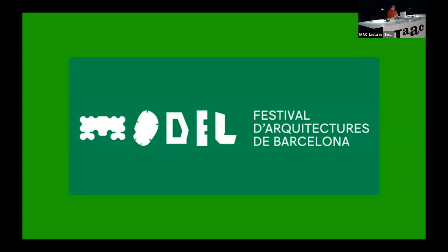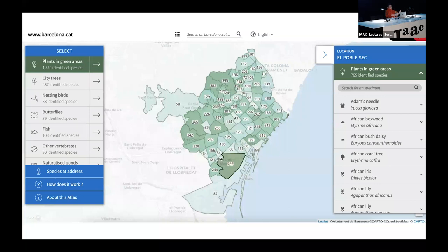Another project I wanted to explain was this one we did last year in the context of the Model Festival of Architecture in Barcelona, which will take place next month from the 20th to the 30th of April. I think IAC is going to also do things there, so maybe you're already involved. What they asked us to do was to create something in the public space that had to do with the relationship of humans and other species in the city.